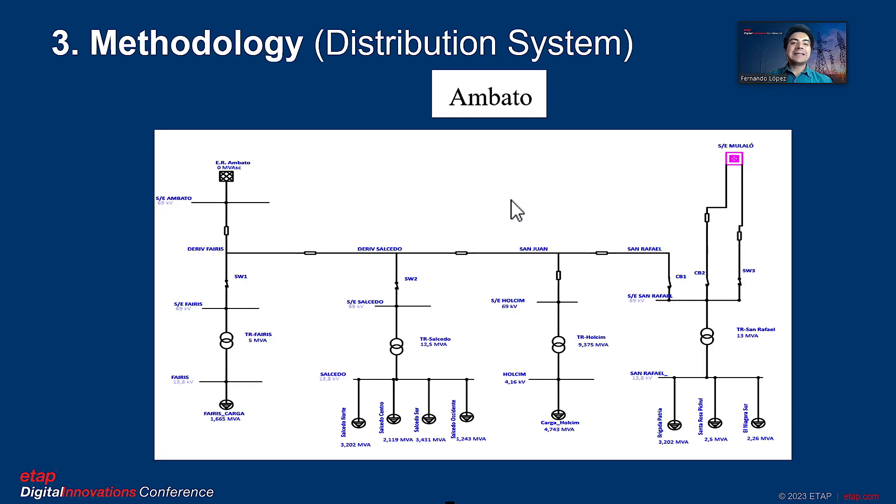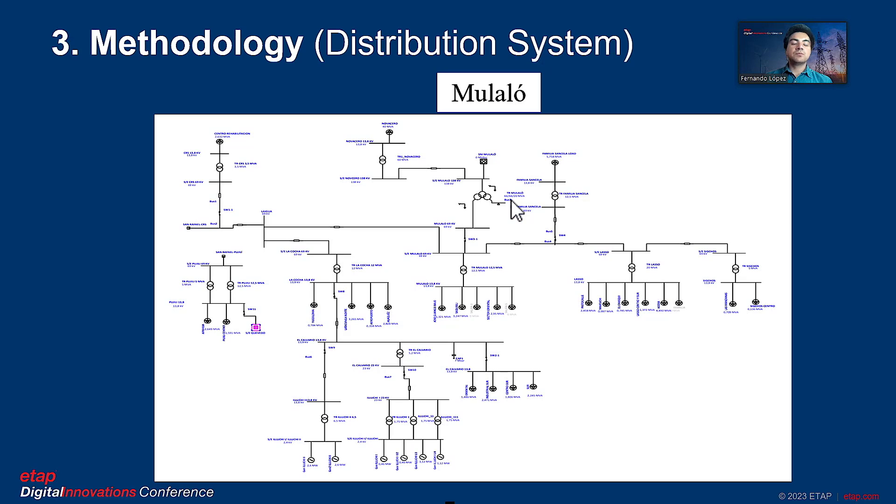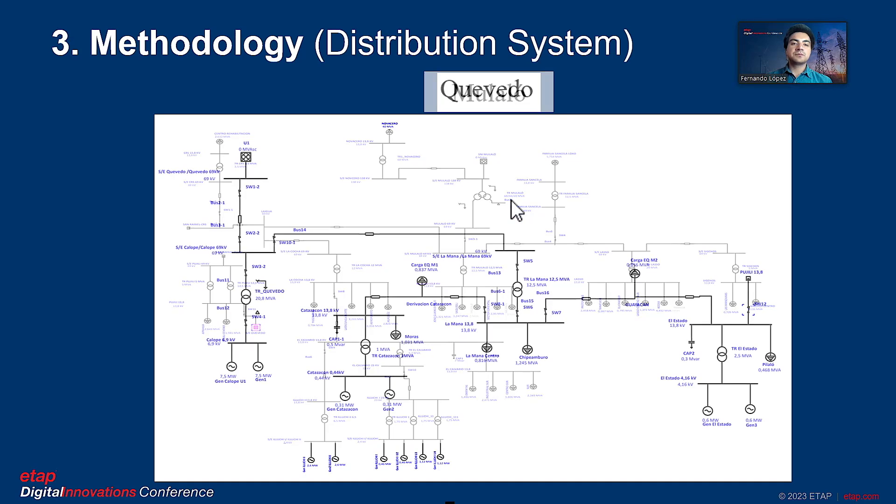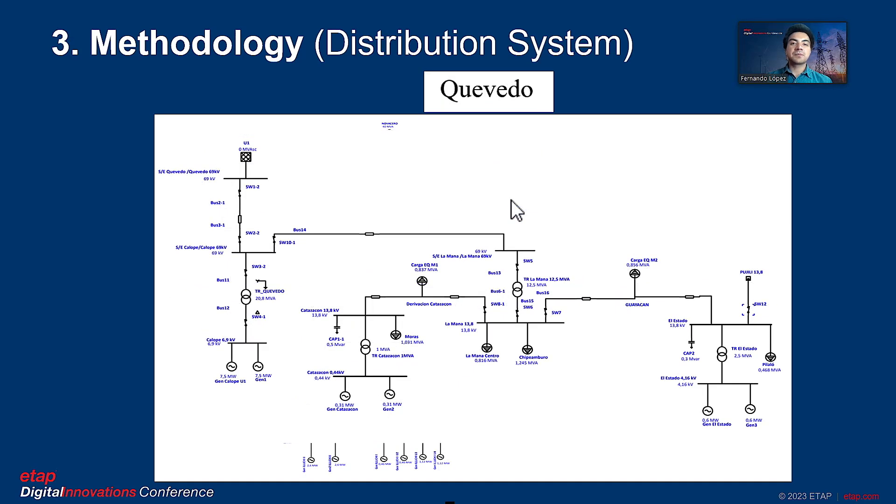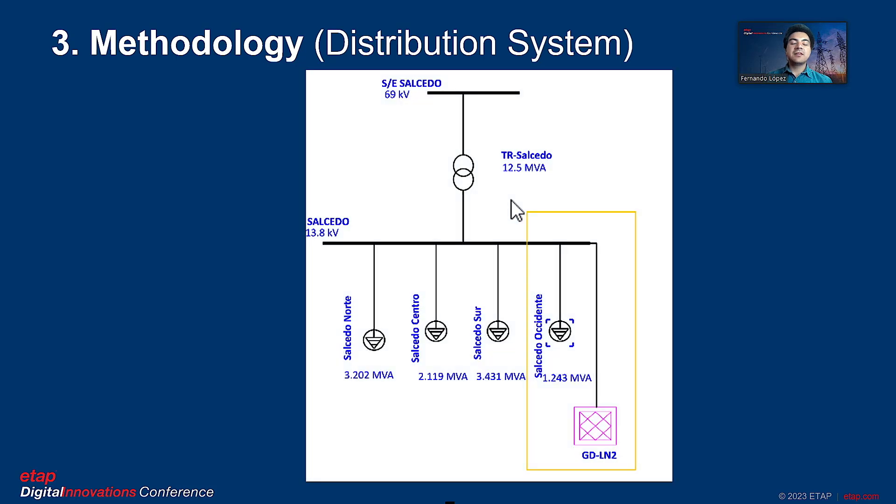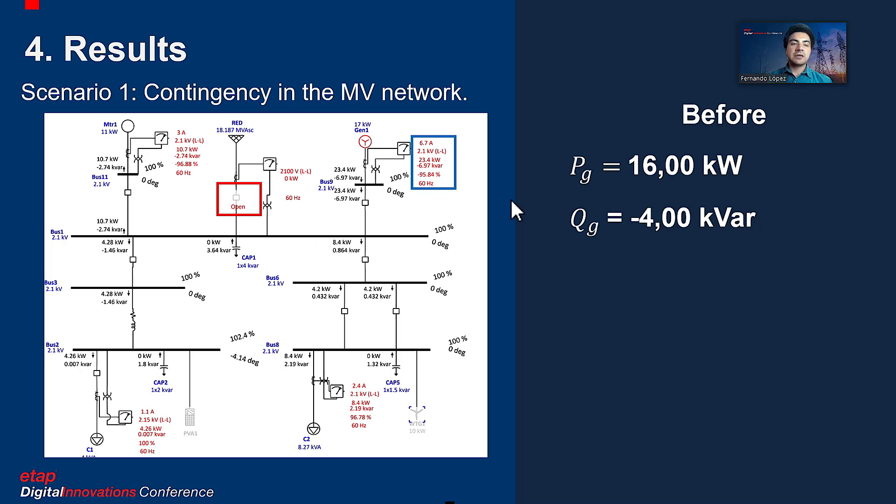The bus bars represent the stable bus bars of the LucasNeo module. The local distribution system model is developed in ETAP, which consists of three feeders that are Ambato, Mulalo, and Quevedo. Then, the GDLN2 distributed generator system is incorporated into the network.